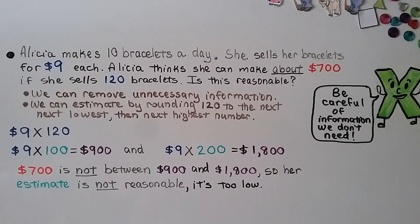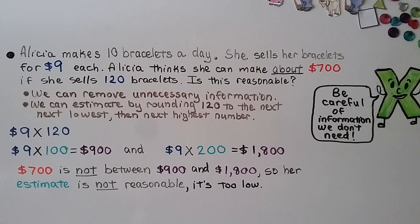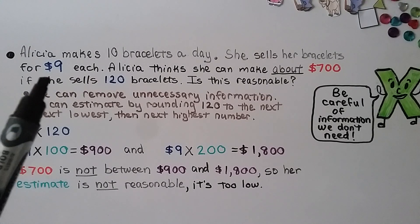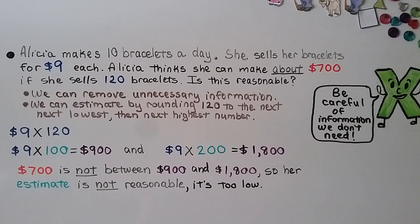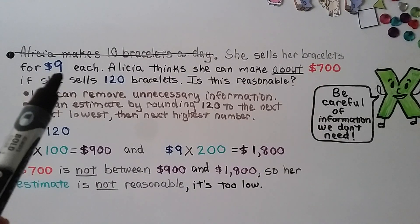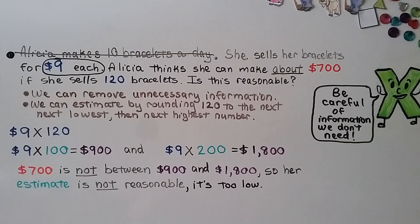Alicia makes 10 bracelets a day and sells them for $9 each. Alicia thinks she can make about $700 if she sells 120 bracelets. Is this reasonable? We need to be careful of unnecessary information in this word problem. We need to know she sells them for $9 each and that she thinks selling 120 of them will make about $700.